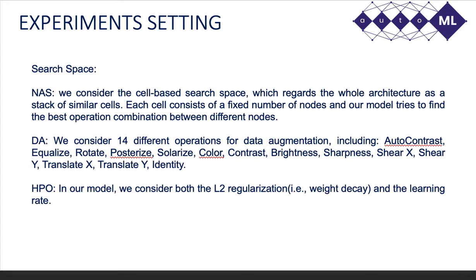In this section, we discuss our experiment setting, especially the searching space. For NAS, we consider the cell-based search space, which regards the whole architecture as a stack of similar cells. Each cell consists of a fixed number of nodes, and the search tries to find the best operation combination between different nodes. For DA, we consider 14 different operations, including auto-contrast, equalize, rotate, posterize, solarize, color, contrast, brightness, sharpness, shear-x, shear-y, translate-x, translate-y, and identity. For HPO, we consider both the L2 regularization (weight decay) and the learning rates.